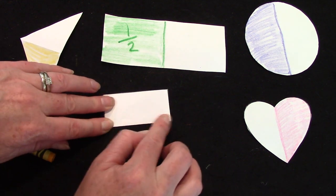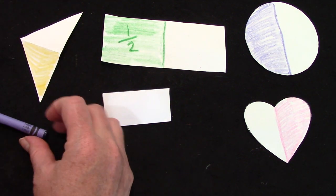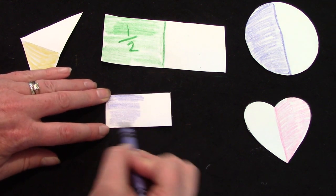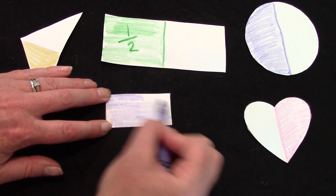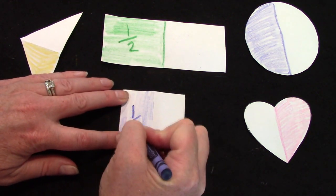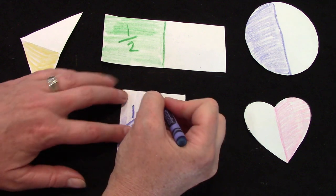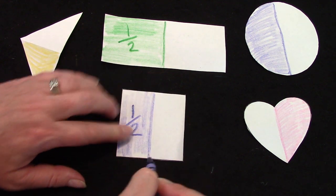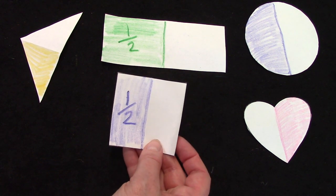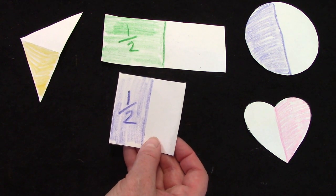I could fold it in half this way and color one half of my square like this, so that when I open it up we have one half colored right straight down the center. But it's not the only way that I could color this and cut it in half.